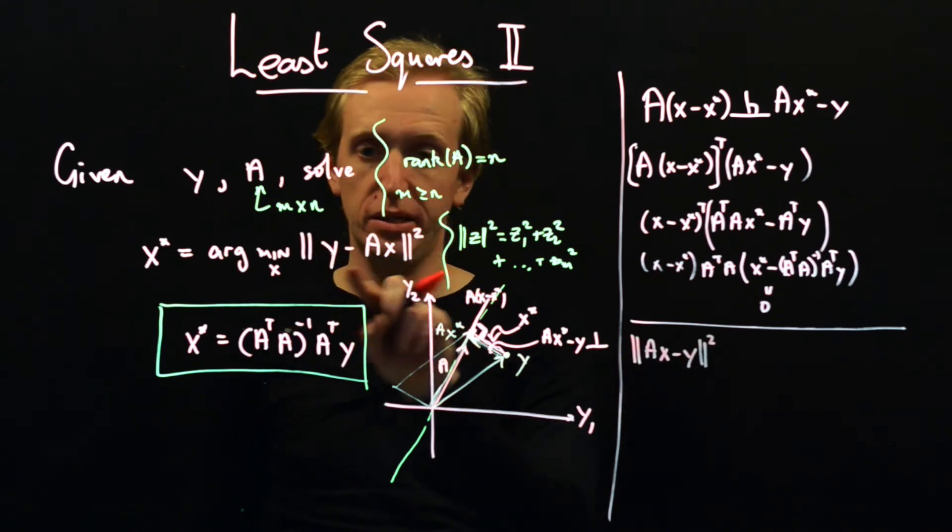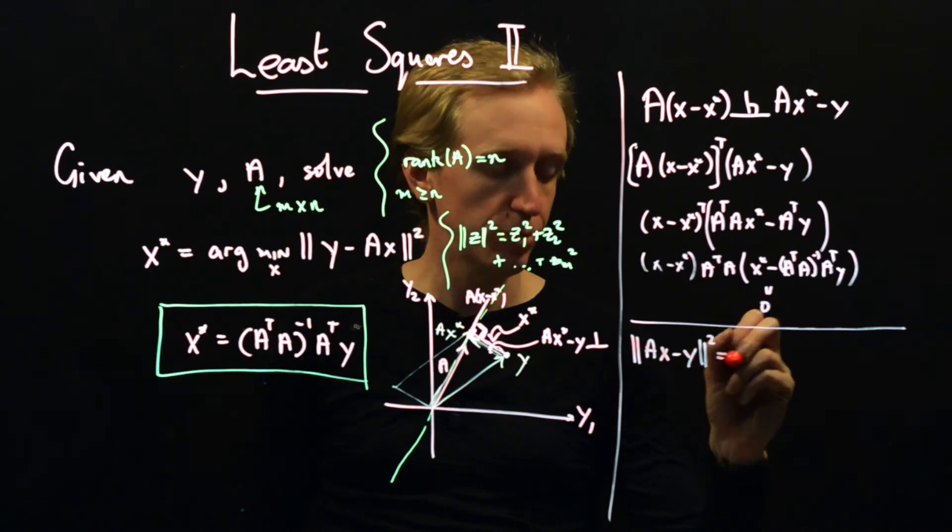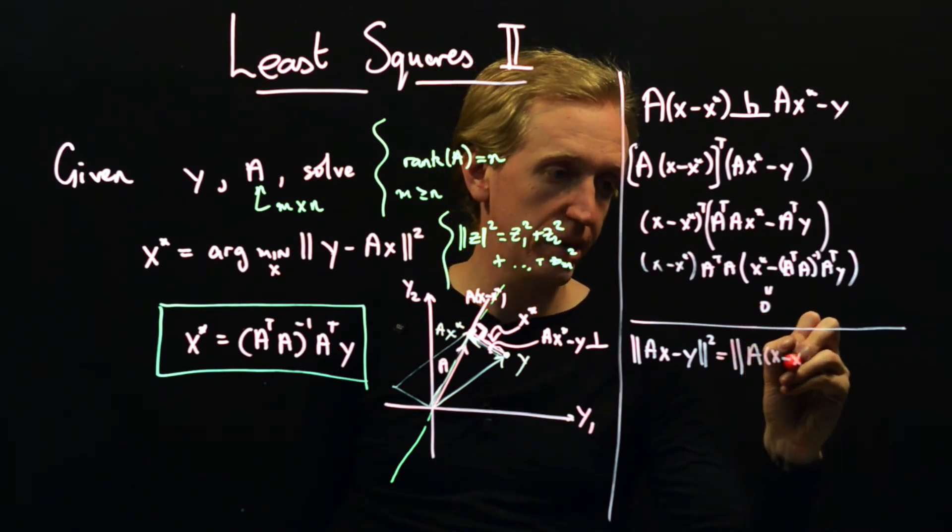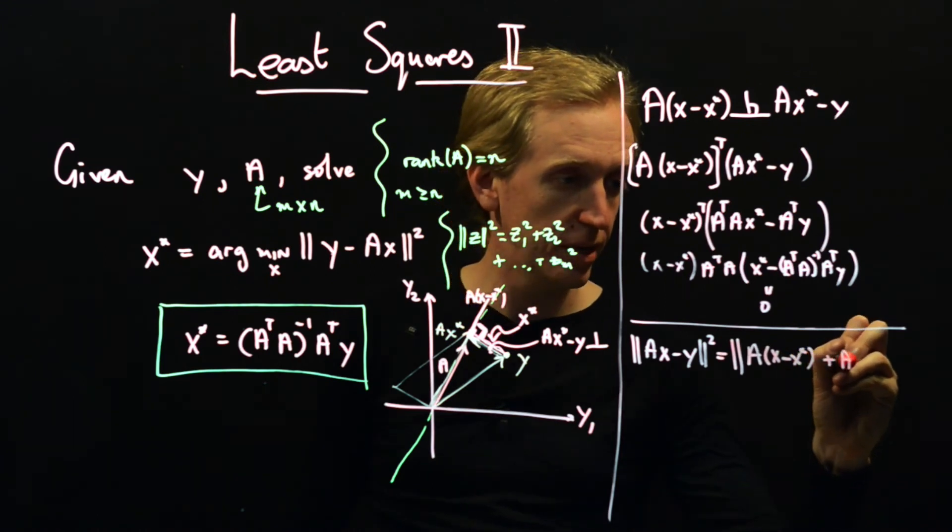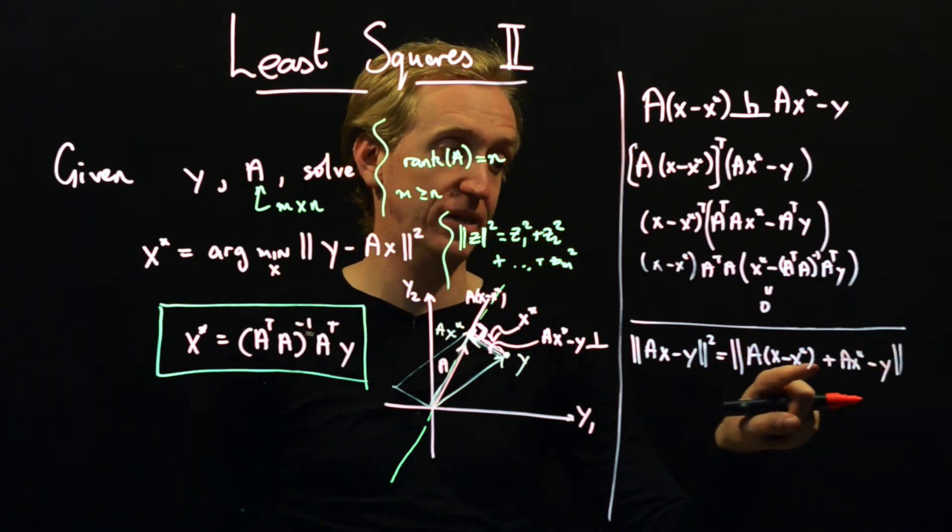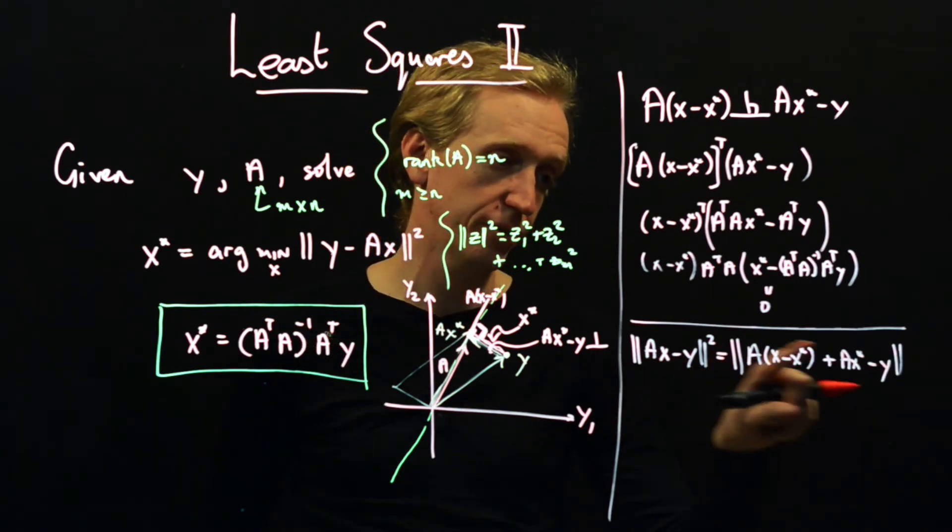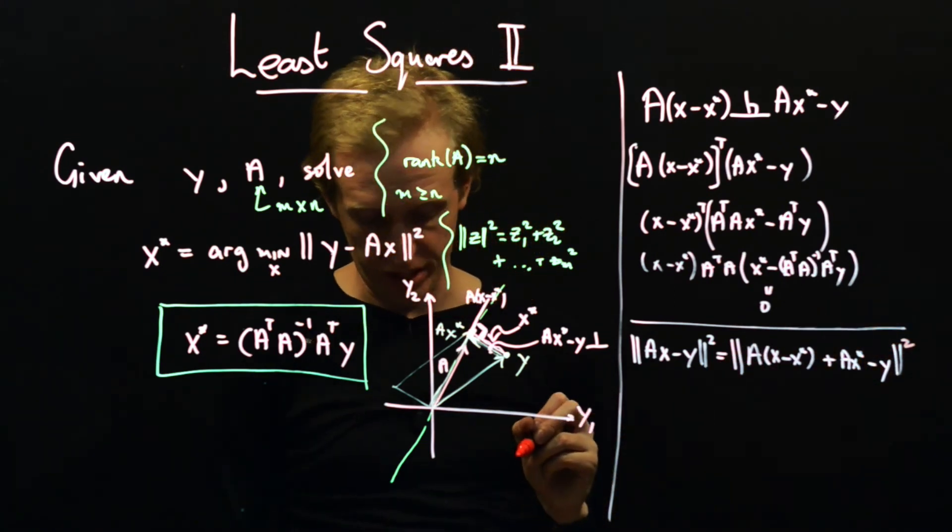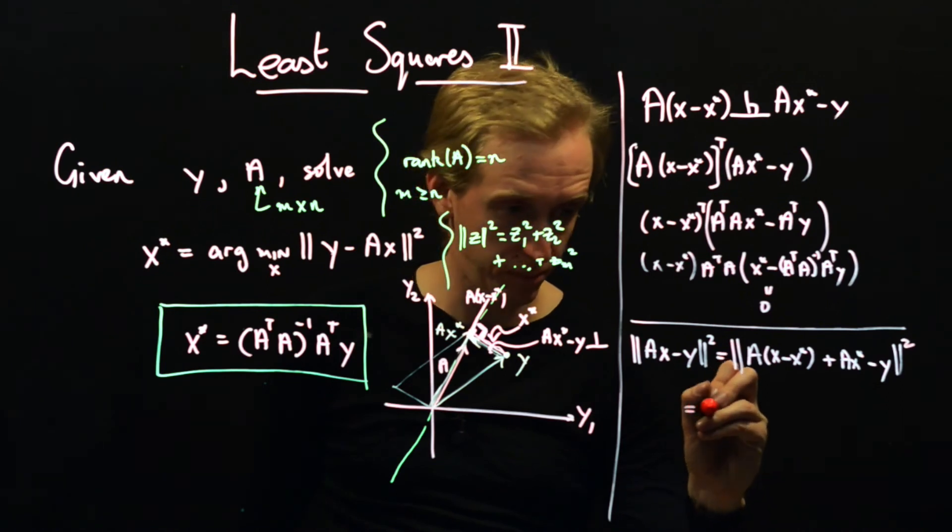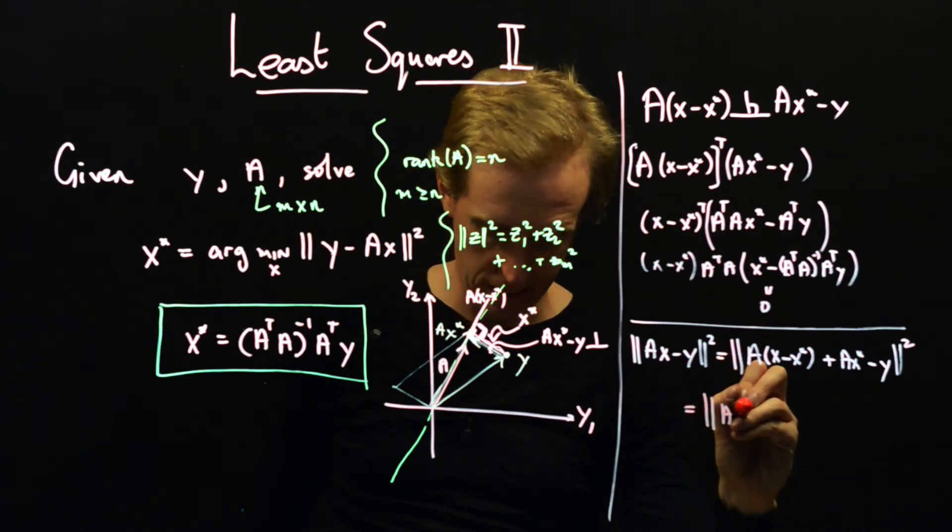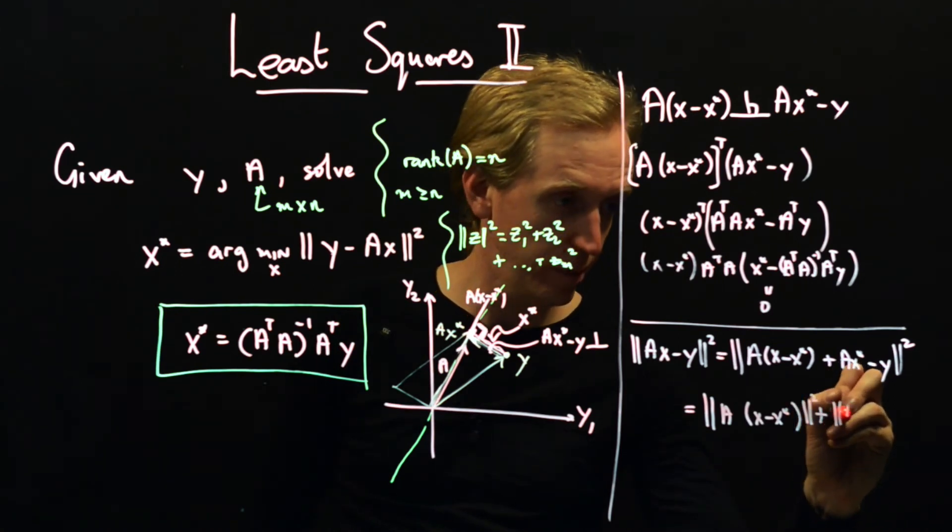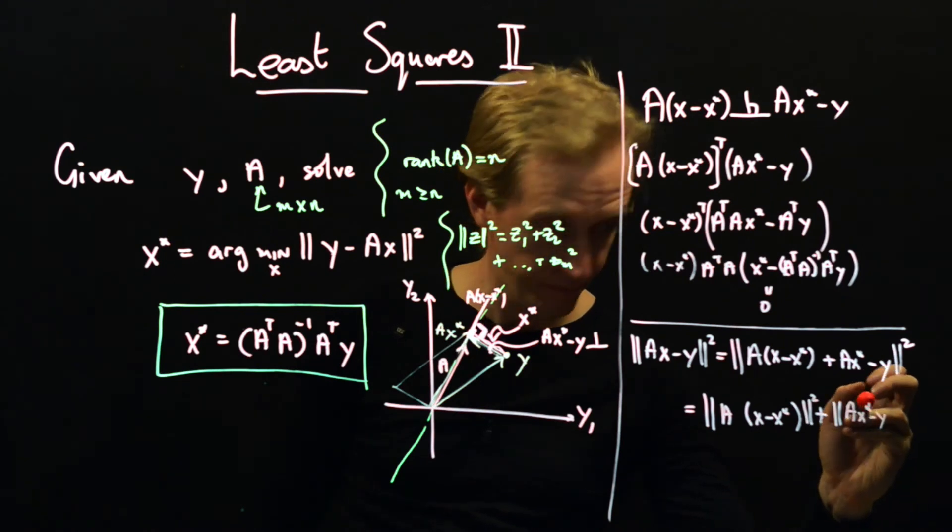And then this is equal to Ax minus x star plus Ax star minus y. So here we see, we've just added and subtracted Ax star. So these two things are equal to each other. And then just like last time, if we multiply this out and we use this property here, we will see that this is equal to the norm of Ax minus x star squared plus the norm of Ax star minus y squared.